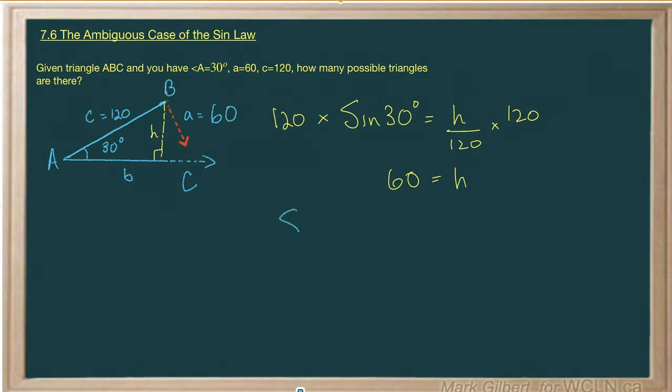Okay, that's important. So since a, side a, and h are equal, there is only one triangle, and that's the right triangle.